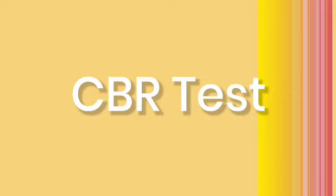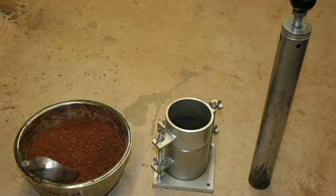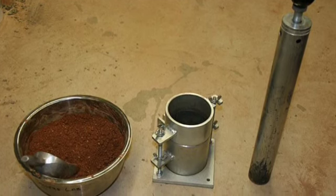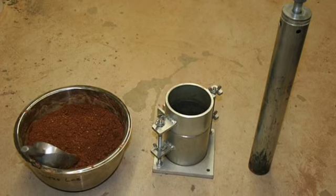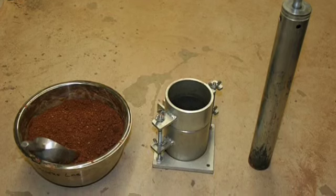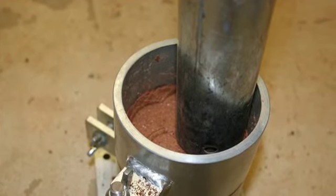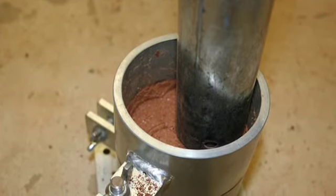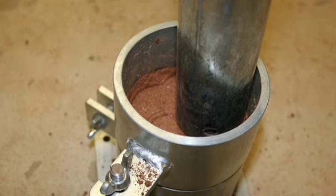Now we will take a look at how the CBR test is performed. First, we took 4.5 kg of lateritic soil and mixed it with 15% water. Then, we fixed the extension collar and the base plate to the mold and inserted the spacer disc over the base plate, and the filter paper was placed on top of the spacer disc.